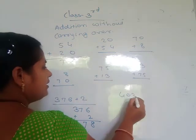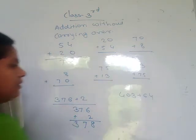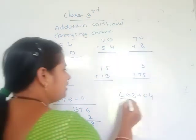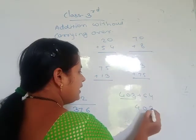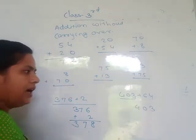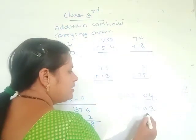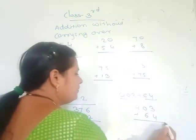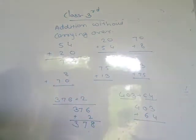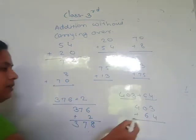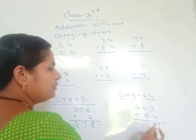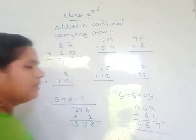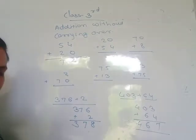Then 403 plus 64. This is a 3-digit number; write 403, and 64 is only a 2-digit number with tens and units places. Units place below units place: 3 plus 4 equals 7. Tens: 0 plus 6 equals 6. Hundreds: 4. So the answer is 467.